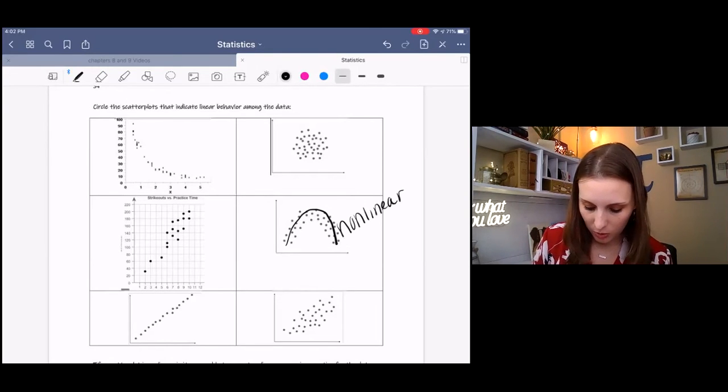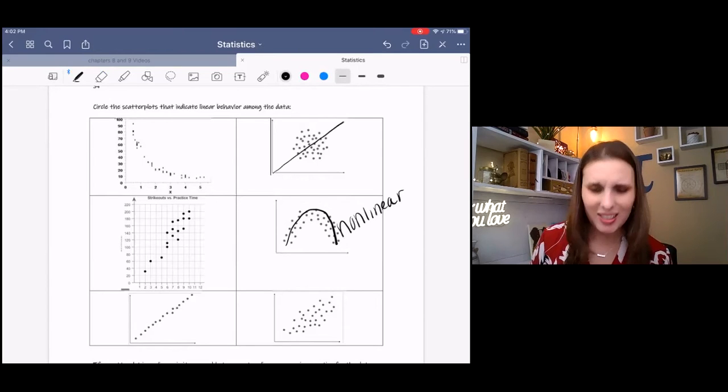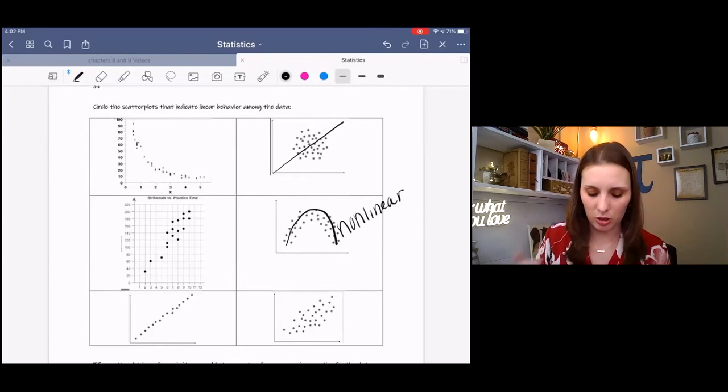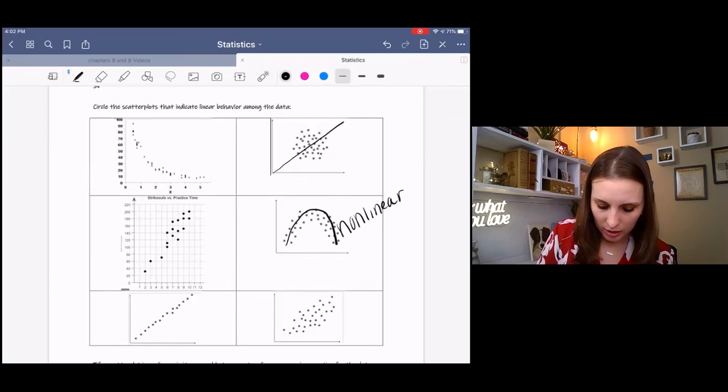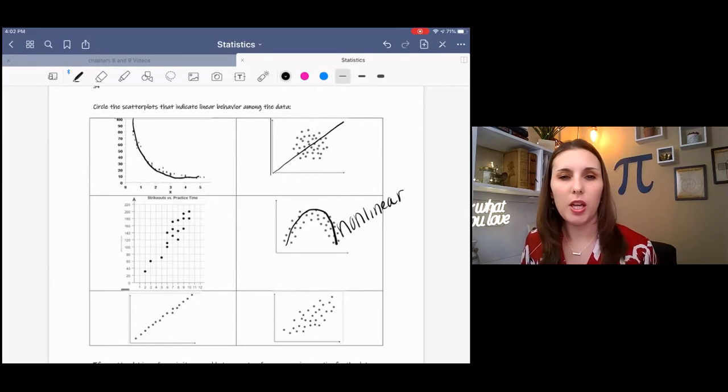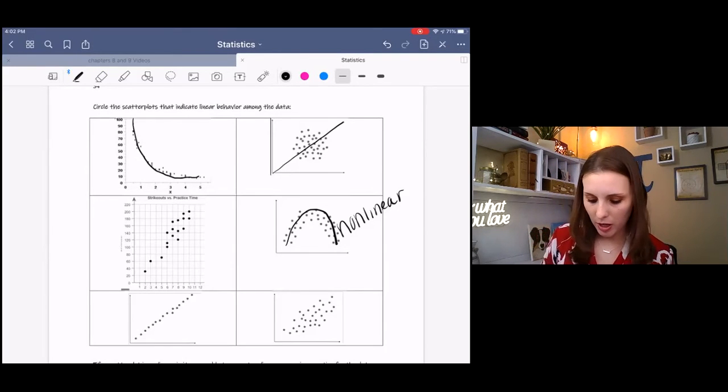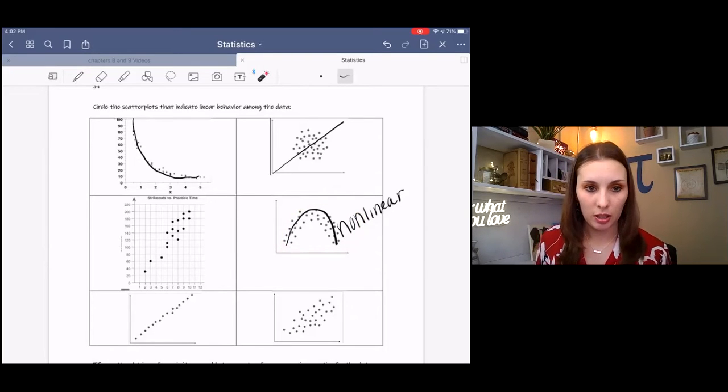Same with this one. It's more of a circle. It's clustered in the middle. So it's not necessarily linear. And then this also has some definite curvature, might be more of like an exponential type thing. This may be more of a quadratic type thing, which indicates nonlinear.